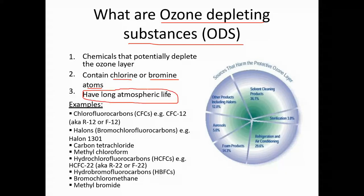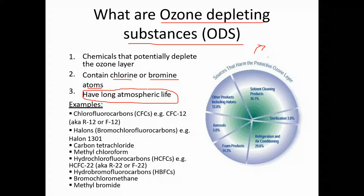Ozone depleting substances have a long atmospheric lifetime — once they enter the atmosphere, they do not diminish in a few hours or days; they remain for many years. In polar regions, polar stratospheric clouds (PSCs) are formed, and as rain starts, chlorine atoms break the ozone layer and ClO⁻ is formed, breaking down the ozone layer.